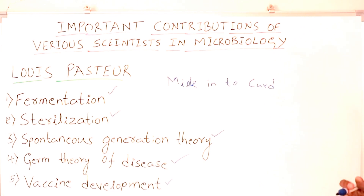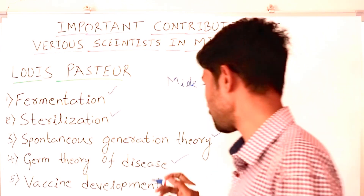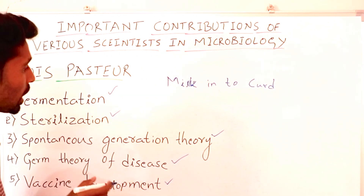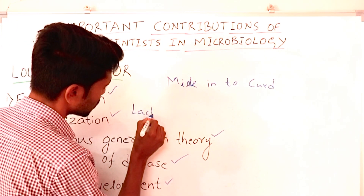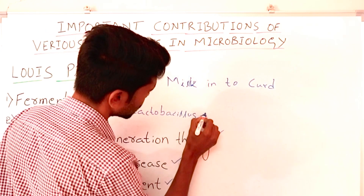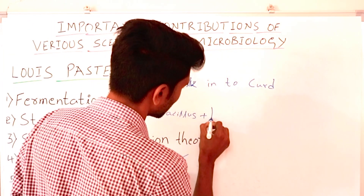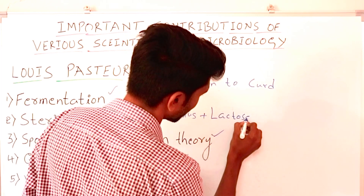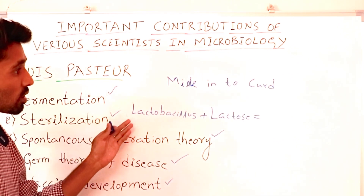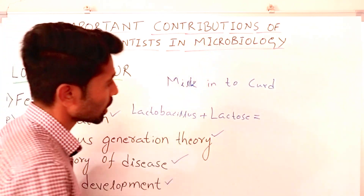Now we will study what exactly happens during this conversion. Curd contains a bacterium called Lactobacillus, and milk contains a sugar called Lactose. When we mix curd into the milk, the Lactobacillus inside the curd will convert the Lactose inside the milk into lactic acid.